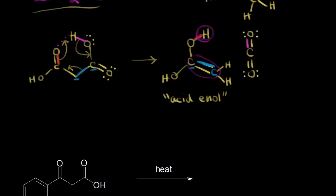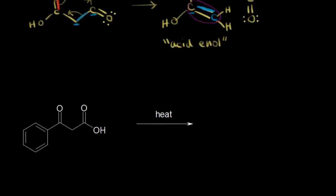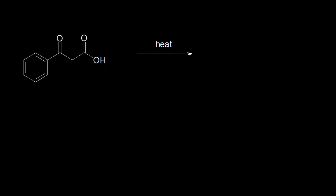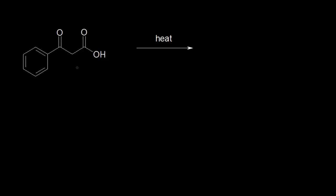Let's look at another example where we don't have a dioic acid anymore. We have a carboxylic acid on the right, and on the left we have a ketone. The key point is: here's the alpha carbon and here's the beta carbon. We have a carbonyl that's beta to our carboxylic acid, and so a decarboxylation reaction can take place.